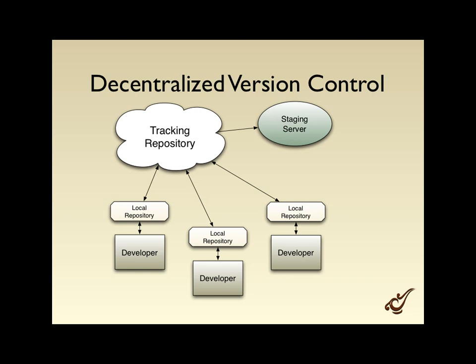The decentralized version control system has a similar architecture — you still have a repository out on the cloud, which we call the tracking repository. But each developer also has a local repository on their local machine. This is great because your repository is local and nobody else sees it except you. That allows you to commit changes more often — as you're working through your code, you may want to save a version without pushing it to the rest of your team.